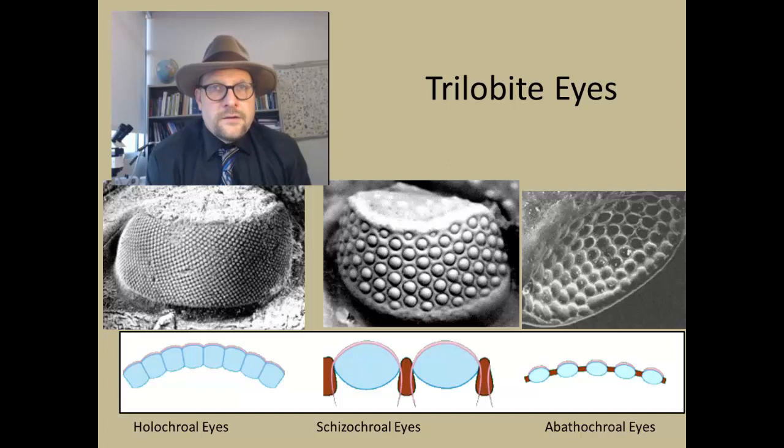Most trilobites have eyes that are what we call the holochroal condition. This is where the lenses in each eye are actually in contact with each other, and then the entire lens is covered by a corneal membrane.